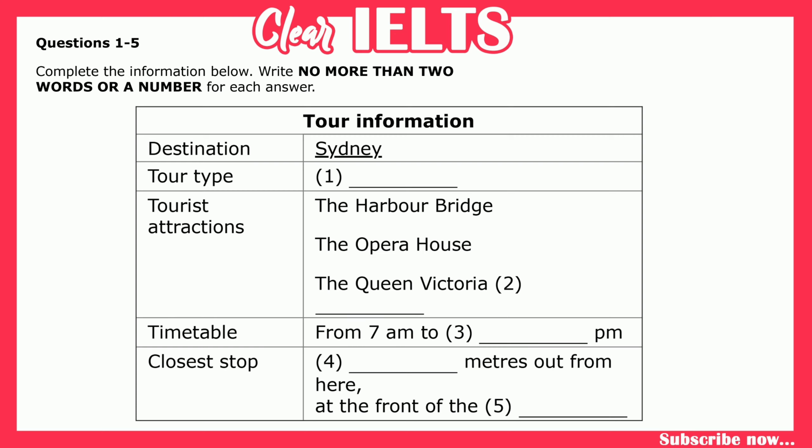Is there a set timetable for the tour? No. The buses run in a loop around the city all day. And what hours do the buses operate? They run from 7am in the morning until 9pm each night. That sounds nice. And the closest stop is just 20 metres out from here, at the front of the hotel.